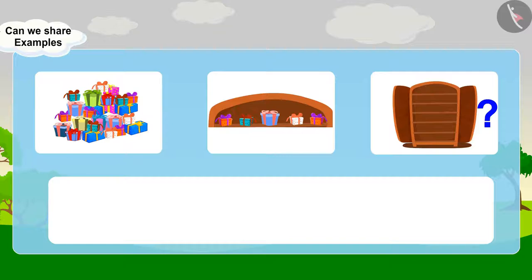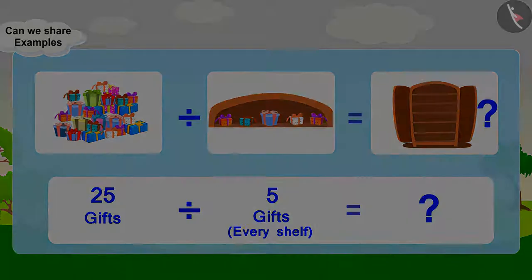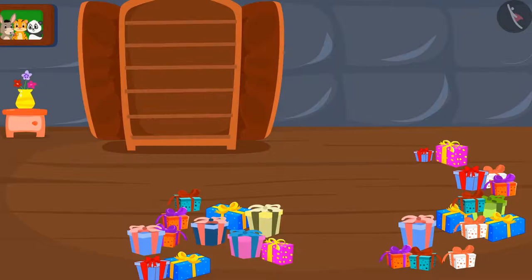We can write this question like this: 25 gifts divided by 5 gifts per shelf equals how many shelves? First, we will put 5 gifts on one shelf.